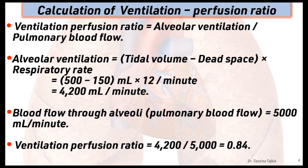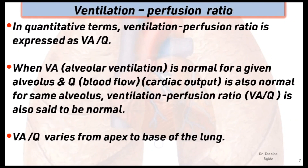The ventilation-perfusion ratio equals alveolar ventilation divided by pulmonary blood flow. Alveolar ventilation equals tidal volume minus dead space, multiplied by respiratory rate. Inputting these values, alveolar ventilation is about 4200 milliliters per minute, and blood flow through alveoli is about 5000 milliliters per minute, so the ventilation-perfusion ratio equals 0.84. In quantitative terms, it is expressed as Va/Q, where Va is alveolar ventilation and Q is blood flow or cardiac output. When Va and Q are both normal for a given alveolus, the ratio is said to be normal.